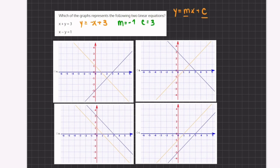We can subtract x on both sides again, so we have negative y equals negative x plus 1. Now, we can divide by negative 1 on both sides and we have y equals x minus 1. So, our slope will be a positive 1 and our y-intercept will be a negative 1.